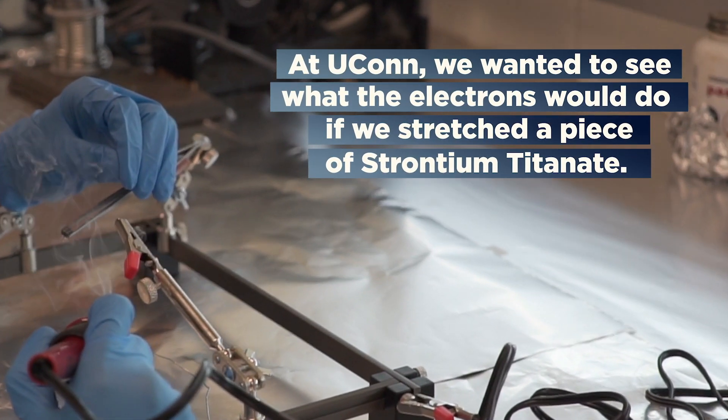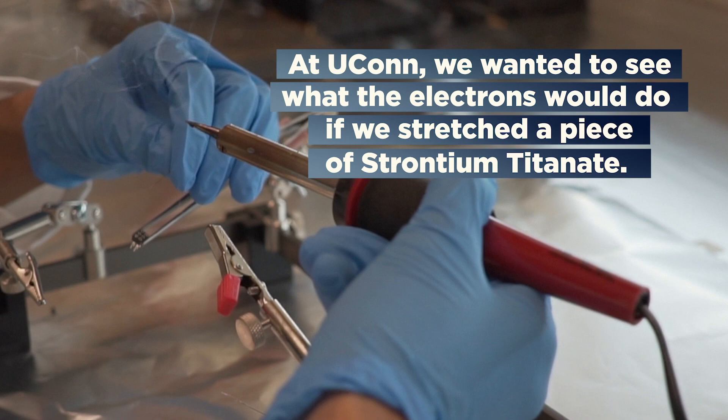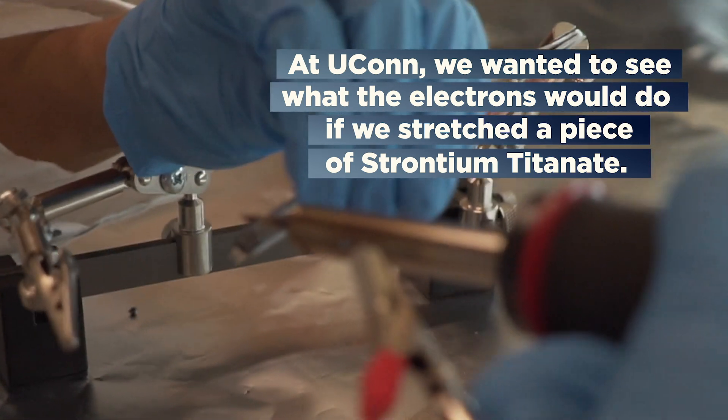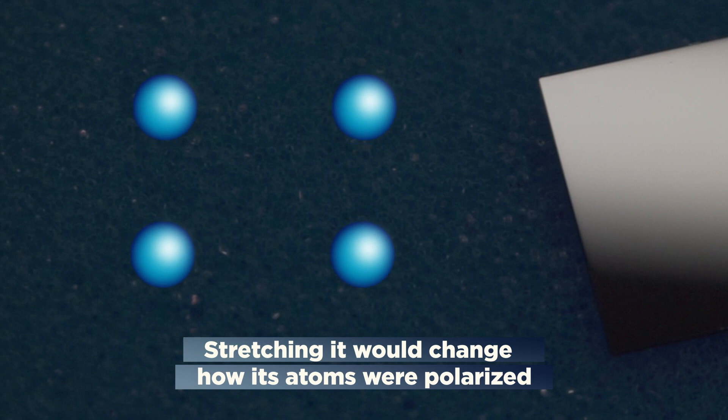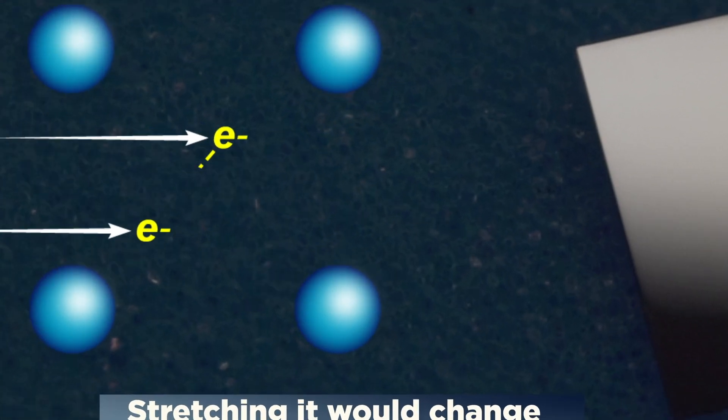At UConn, we wanted to see what the electrons would do if we stretched a piece of strontium titanate. Stretching it would change how its atoms were polarized, and that could change how its electrons move.